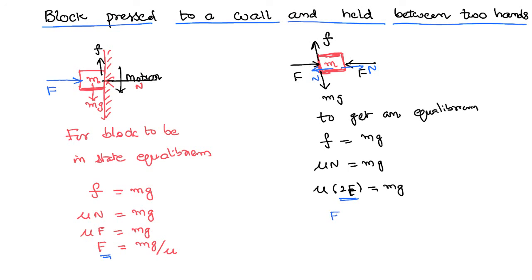Therefore, the minimum force F required to keep the block in the state of rest between the two hands in equilibrium is mg by 2μ. You might have noticed when compared with the previous case, this is only half.